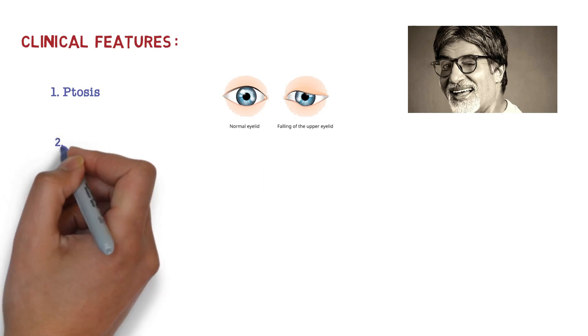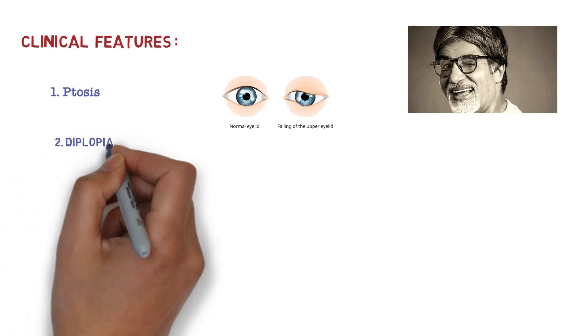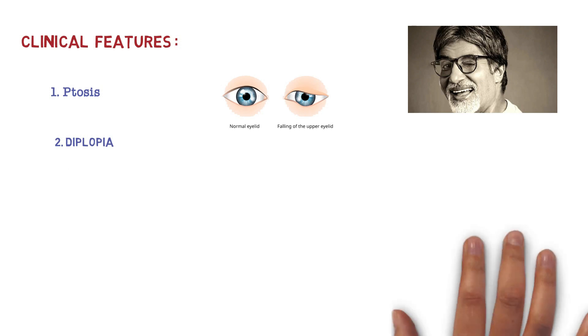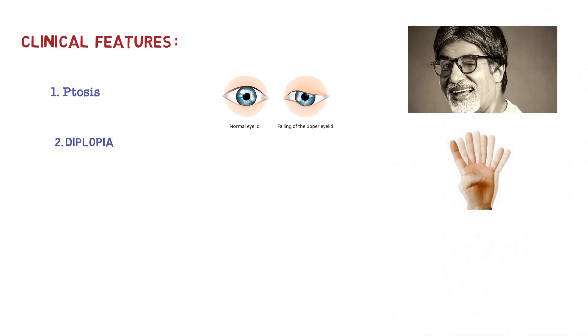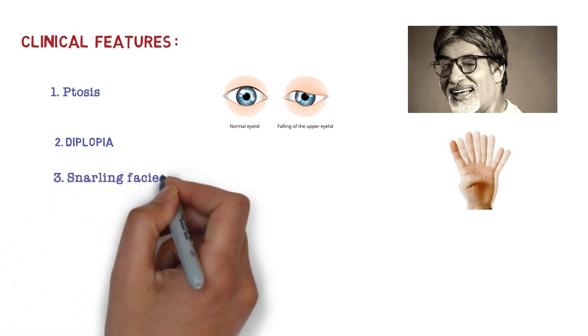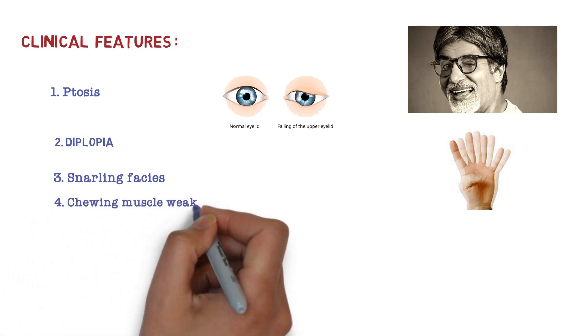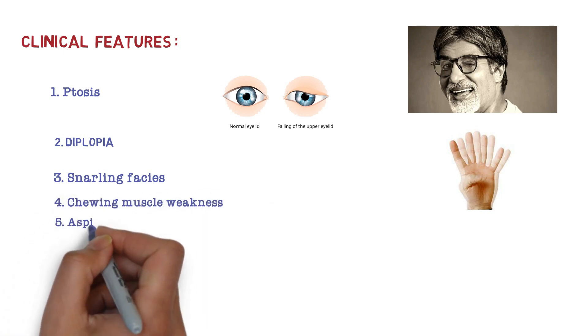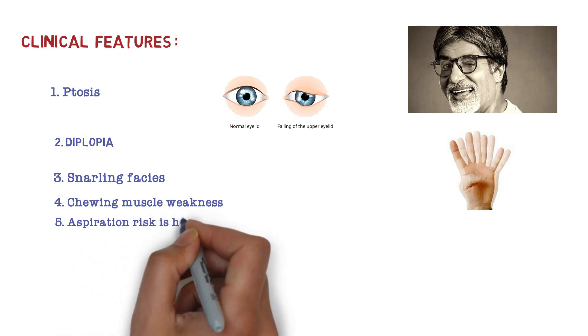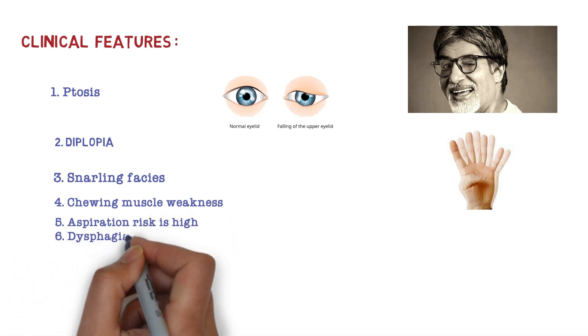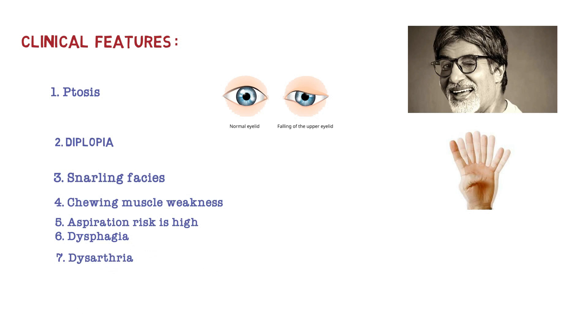The second important clinical feature is diplopia. You can test for this by asking patient for upward gaze for more than 30 seconds, which will trigger ptosis and diplopia. There is snarling face when we ask patient to smile, showing muscle weakness. There is high risk of aspiration, dysphagia specifically oropharyngeal dysphagia, dysarthria since muscles of vocal cords are affected. But deep tendon reflexes are preserved.